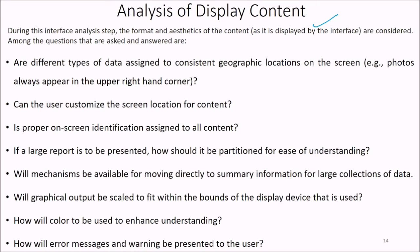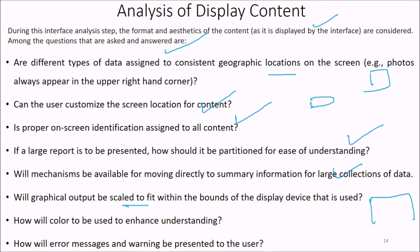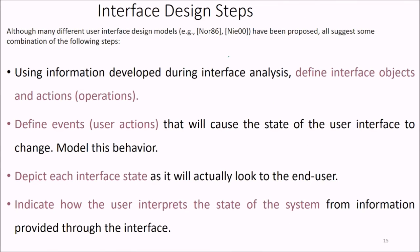In the interface analysis step, display content format and aesthetics are considered. Questions include: Are different types of data assigned to consistent geographic locations on screen? Can users customize the screen location? Is proper on-screen identification assigned? If a report is large, how is it partitioned for easy understanding? Will graphical output scale fit the display device — whether mobile or a large workstation? How will colors enhance understanding? You cannot use green for stop and red for start. How will error messages and warnings be presented?